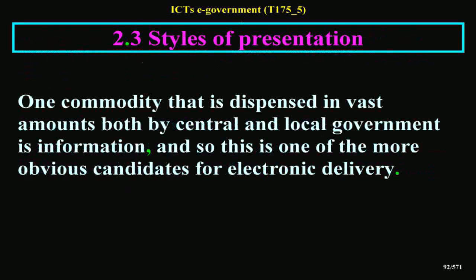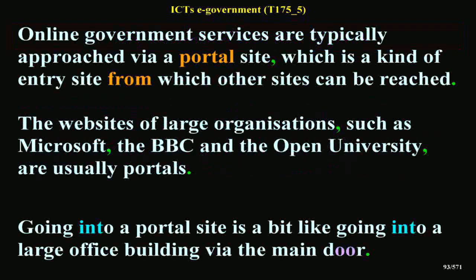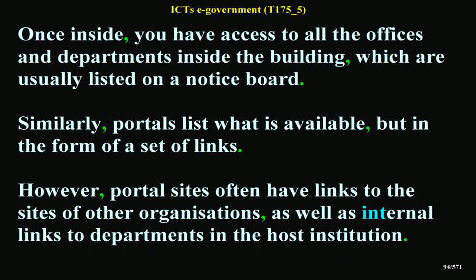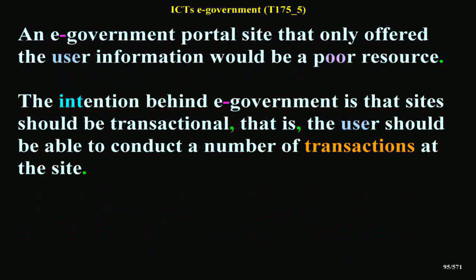One commodity dispensed in vast amounts by both central and local government is information, and so this is one of the more obvious candidates for electronic delivery. Online government services are typically approached via a portal site, which is a kind of entry site from which other sites can be reached. The websites of large organizations, such as Microsoft, the BBC and the Open University, are usually portals. Going into a portal site is a bit like going into a large office building via the main door — once inside, you have access to all the offices and departments, which are usually listed on a notice board. Similarly, portals list what is available in the form of a set of links. Portal sites often have links to the sites of other organizations, as well as internal links to departments in the host institution.